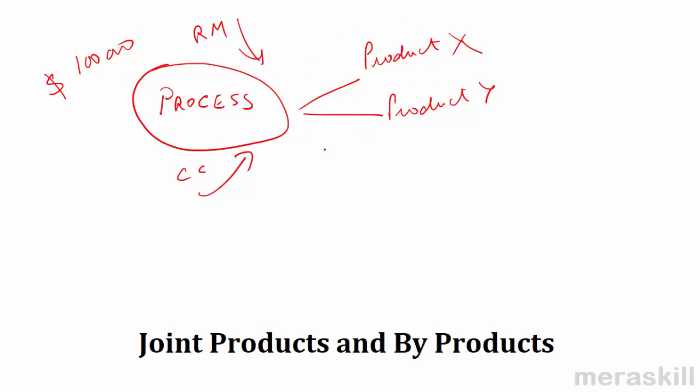So our whole problem here is that this process cost that you are incurring, this $100,000 that you have incurred, has to be apportioned between product X and product Y. And what is the basis for apportioning? We will try and find out some reasonable basis of apportionment of these joint processing costs.